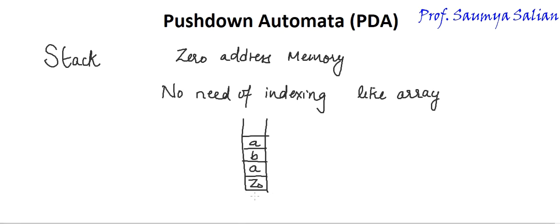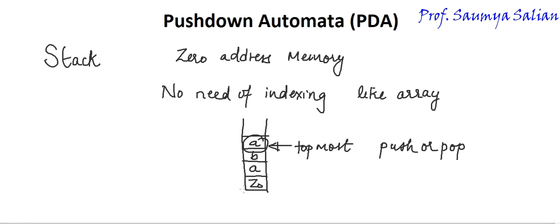Now consider this to be our stack. It is called zero address memory because all operations like push and pop will always be done at the topmost element of the stack. Considering the stack size to be infinite, PDA avoids the problem of stack overflow. To handle the problem of stack underflow, there is a special symbol Z naught which is always present at the bottom of the stack. Z naught is always the initial or bottom symbol of the stack.